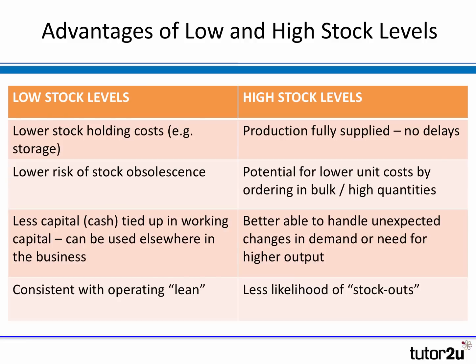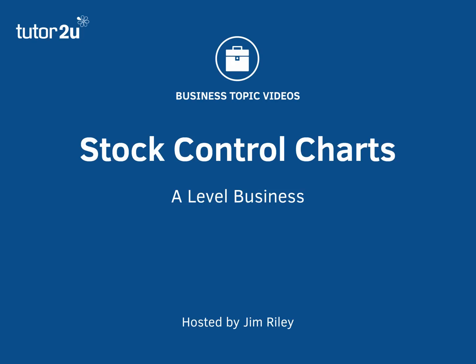When you look at stock management, you can see there are advantages to holding low levels of stock — a low minimum level reduces stock holding costs and the risk of stock becoming obsolete, and is consistent with lean production. However, there are also advantages to setting a higher minimum stock level: the business is better able to handle unexpectedly strong customer demand, and it reduces the risk of a stock out. That's been a brief introduction to and explanation of stock control charts.